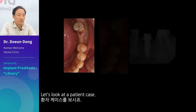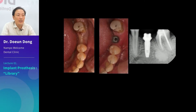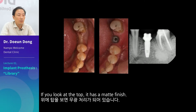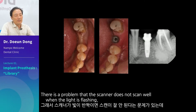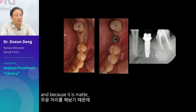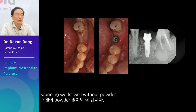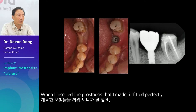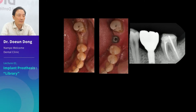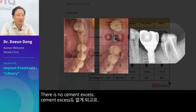Let's look at a patient case. This is what a digital abutment looks like — if you look at the top, it has a matte finish. There is a problem that the scanner does not scan well when light is flashing, but because it is matte, scanning works well without powder. When I inserted the prosthesis that I made, it fitted perfectly. The margin going to the sub is perfect. There is no cement excess.